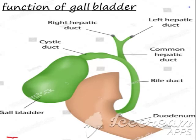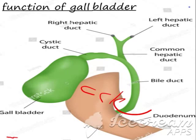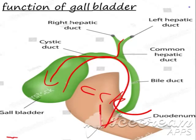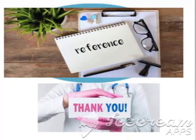Hepatic bile also includes fats like cholesterol, fatty acids, and lecithin. The second function is to respond to intestinal hormones such as cholecystokinin, to empty and refill its bile store. It stores the bile and releases it into the duodenum when required. It also regulates pressure in the biliary apparatus. This covers all the functions of the gallbladder.